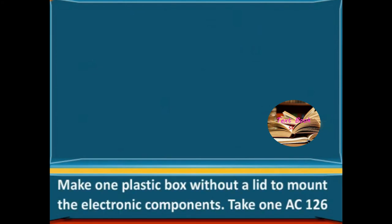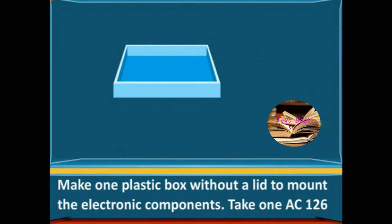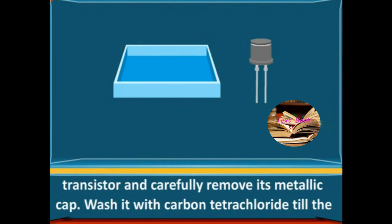Method: Make one plastic box without a lid to mount the electronic components. Take one AC126 transistor and carefully remove its metal cap.